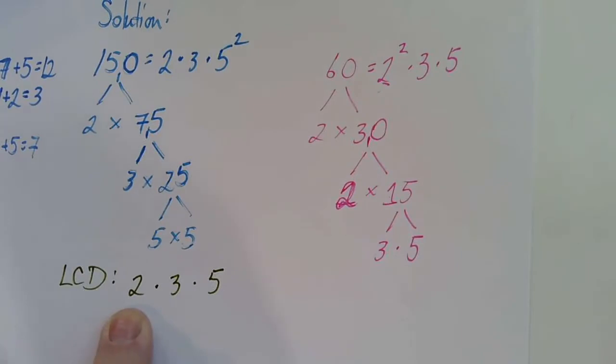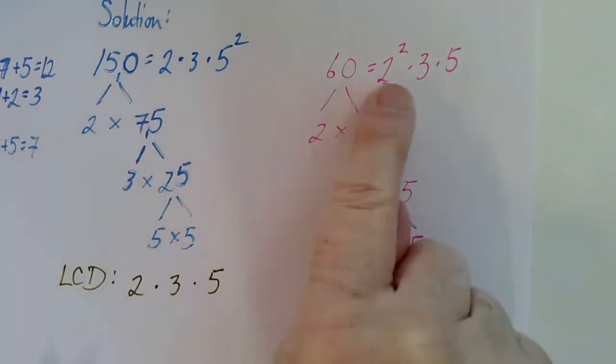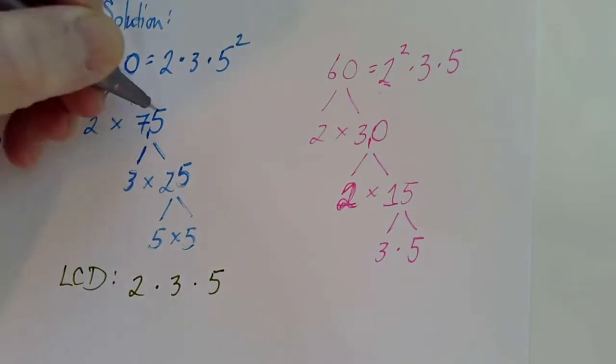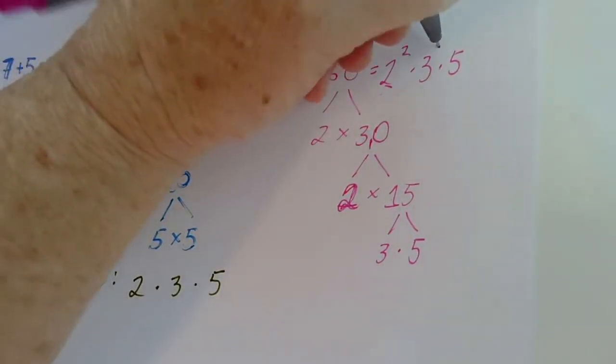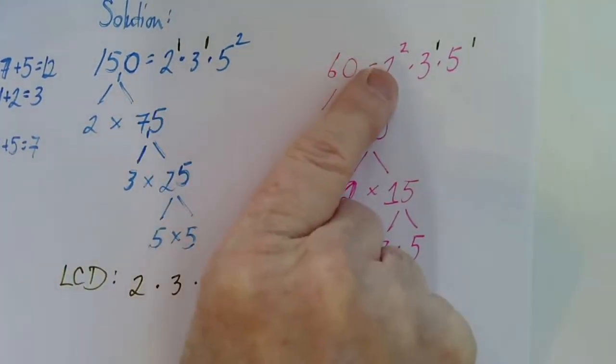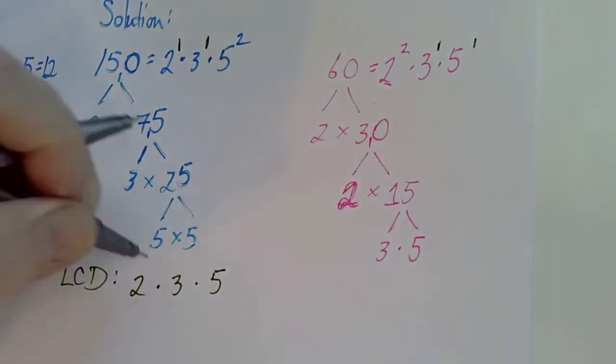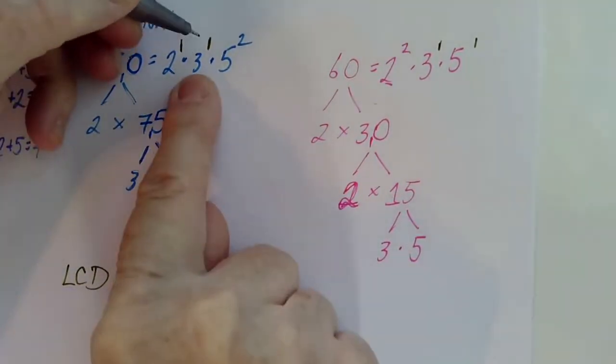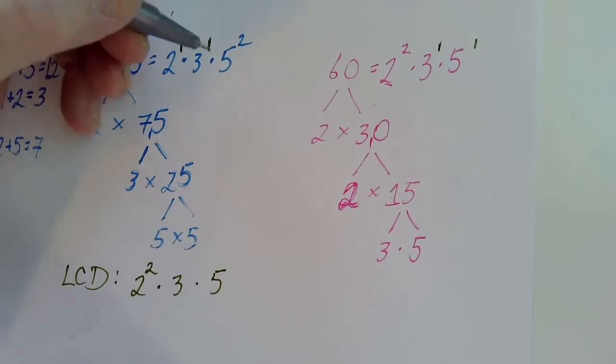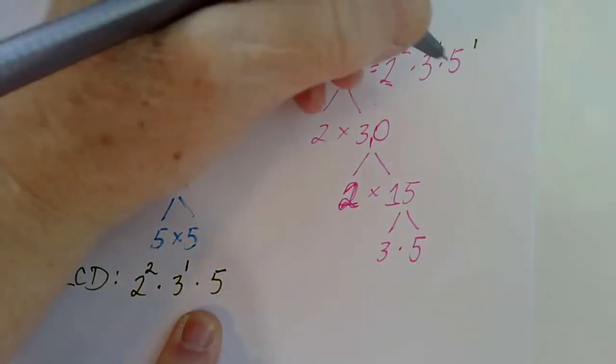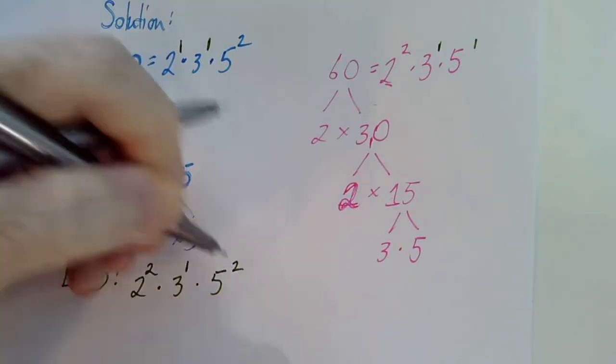Now, for the two, I want to choose the exponent that's larger. If there's no exponent written, that's an exponent of one. So I've got two to the one power and two to the second power. I'm going to choose two. For the three, I have three to the one and three to the one, so I'm going to choose one. And for five, I have five squared and five to the one, so I'm going to choose two.